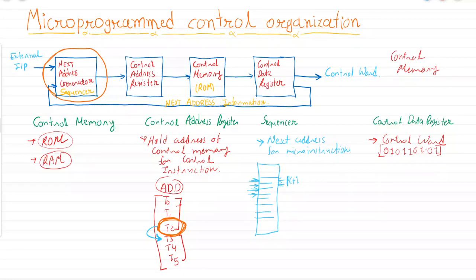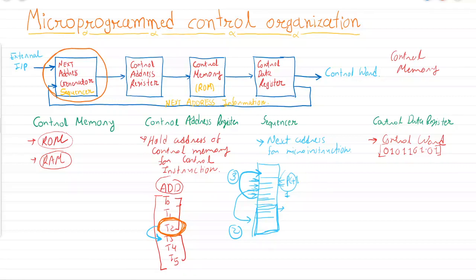In normal linear execution the program counter increments by one. However, sometimes we want to call a subroutine — that is the second case — which causes a change in the program counter. The third case is jumping from one location to another specific location. The fourth case is a loop, where a set of instructions is executed repeatedly. The fifth case is receiving external input from peripheral devices that must be managed.